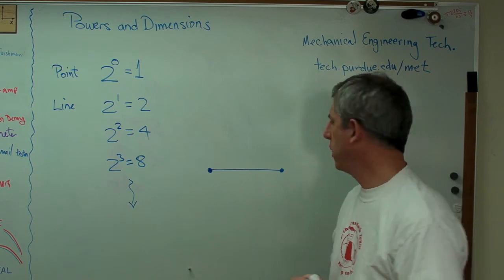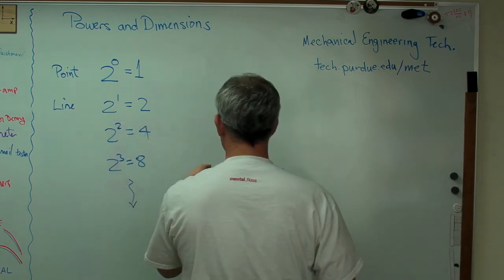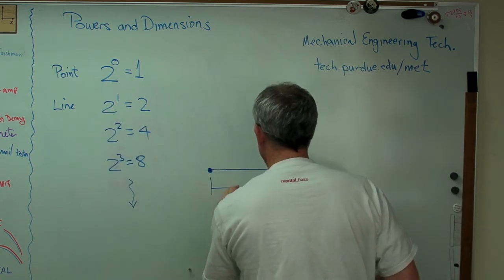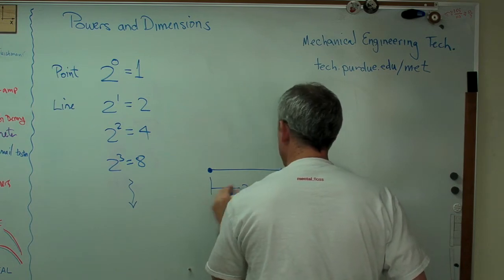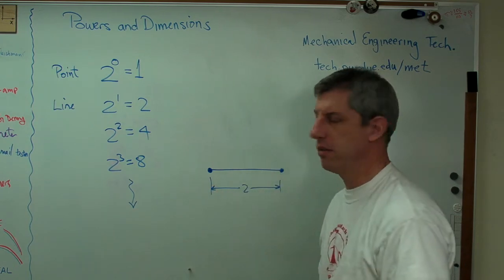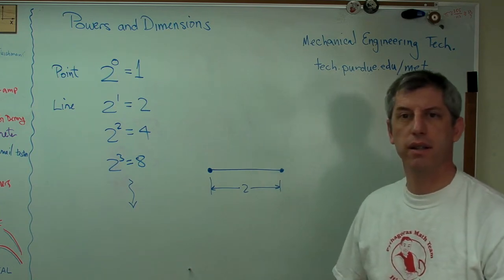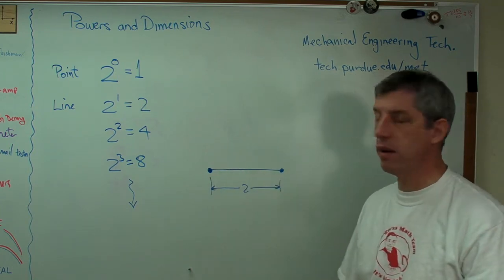What's a two-dimensional object? Okay, two dimensions. Now, let's just say the length of that is two, two somethings, two hand spans. How's that? That's the length of that little line segment.